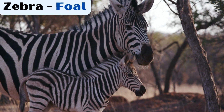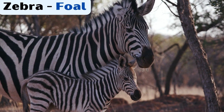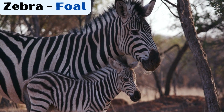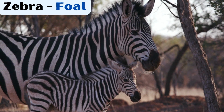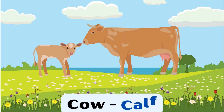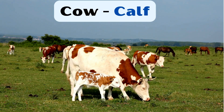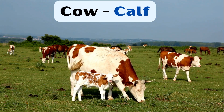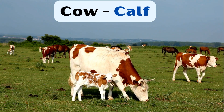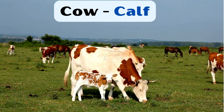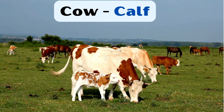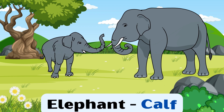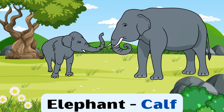The baby zebra is called foal. The baby cow is called calf.